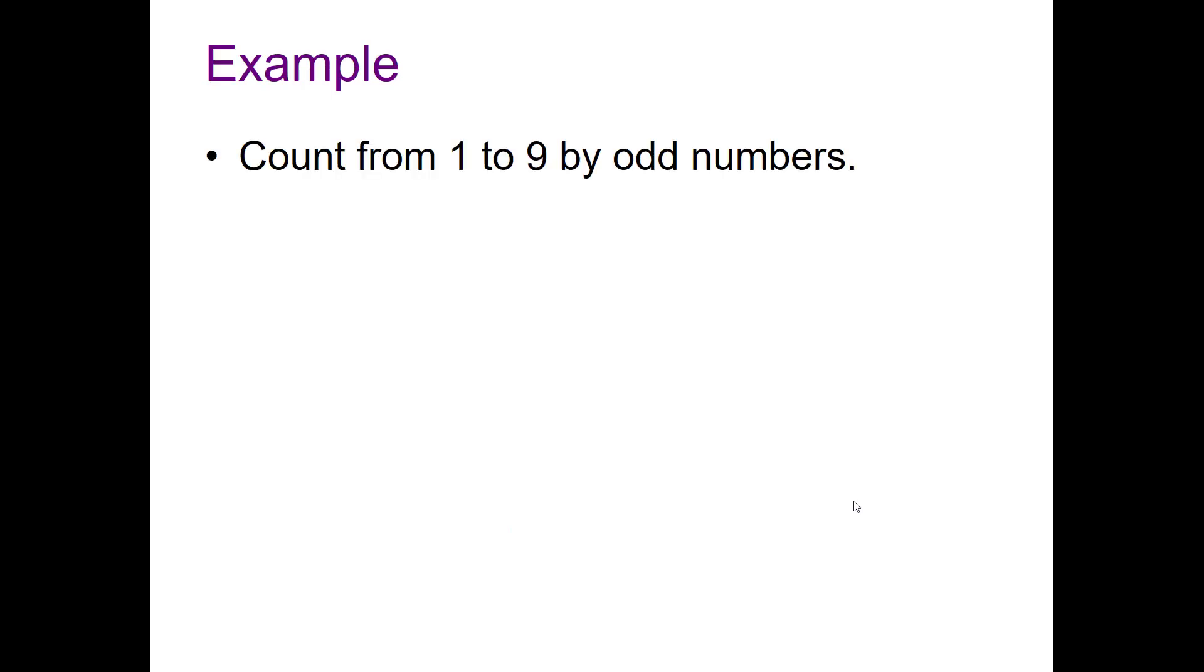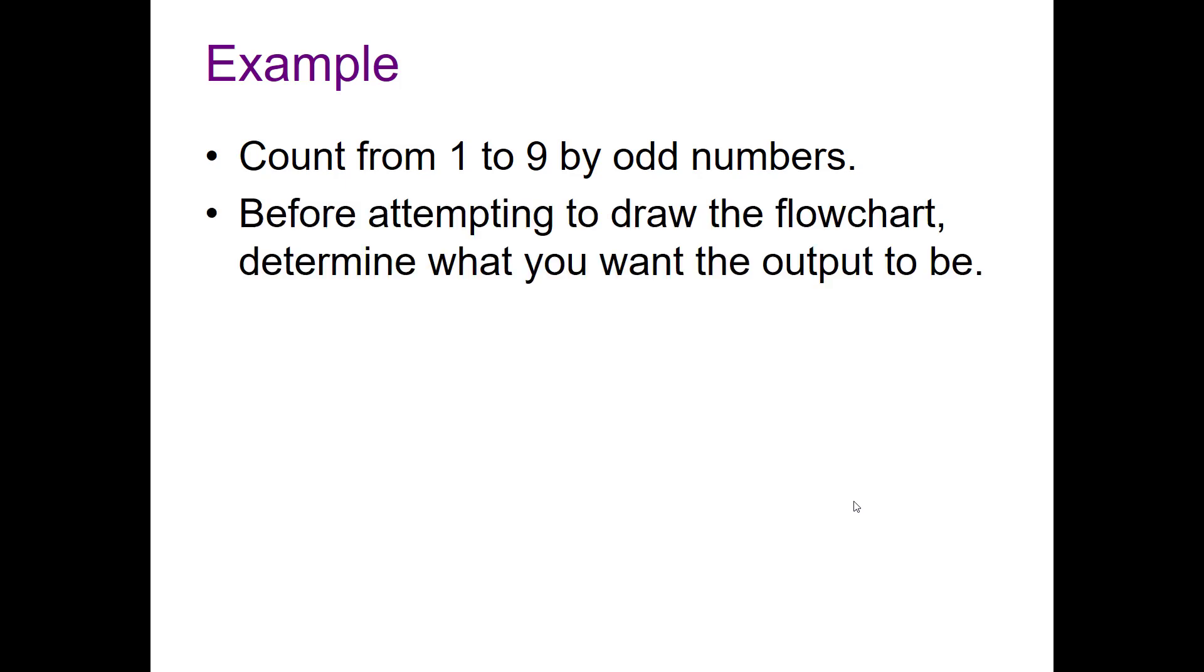So an example: we're going to count from 1 to 9 by odd numbers. So we want to determine what our output wanted, what we want our output to be before we even attempt to draw our flowchart. What's going to be the first block? Always remember, that's going to be our start block.